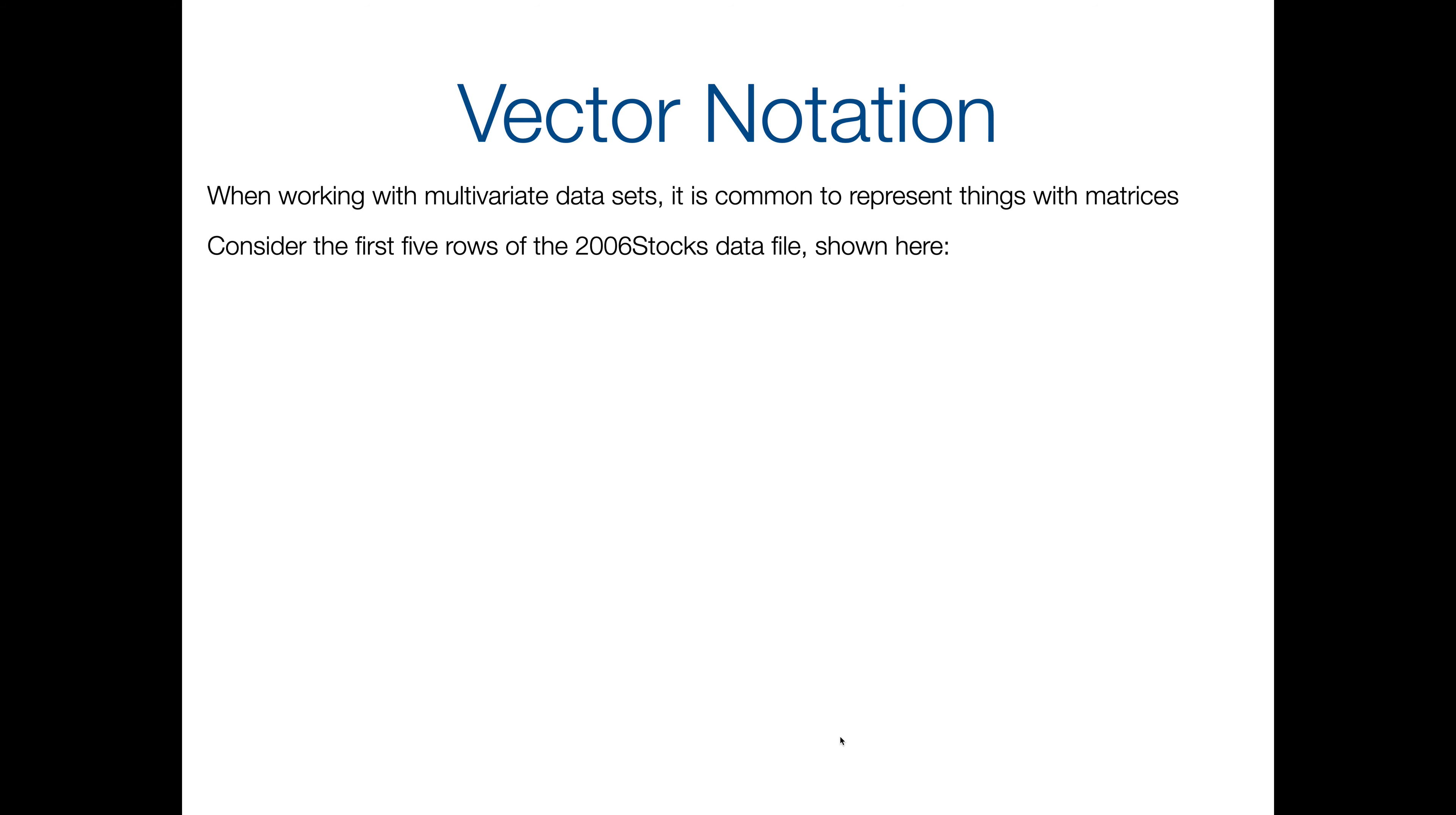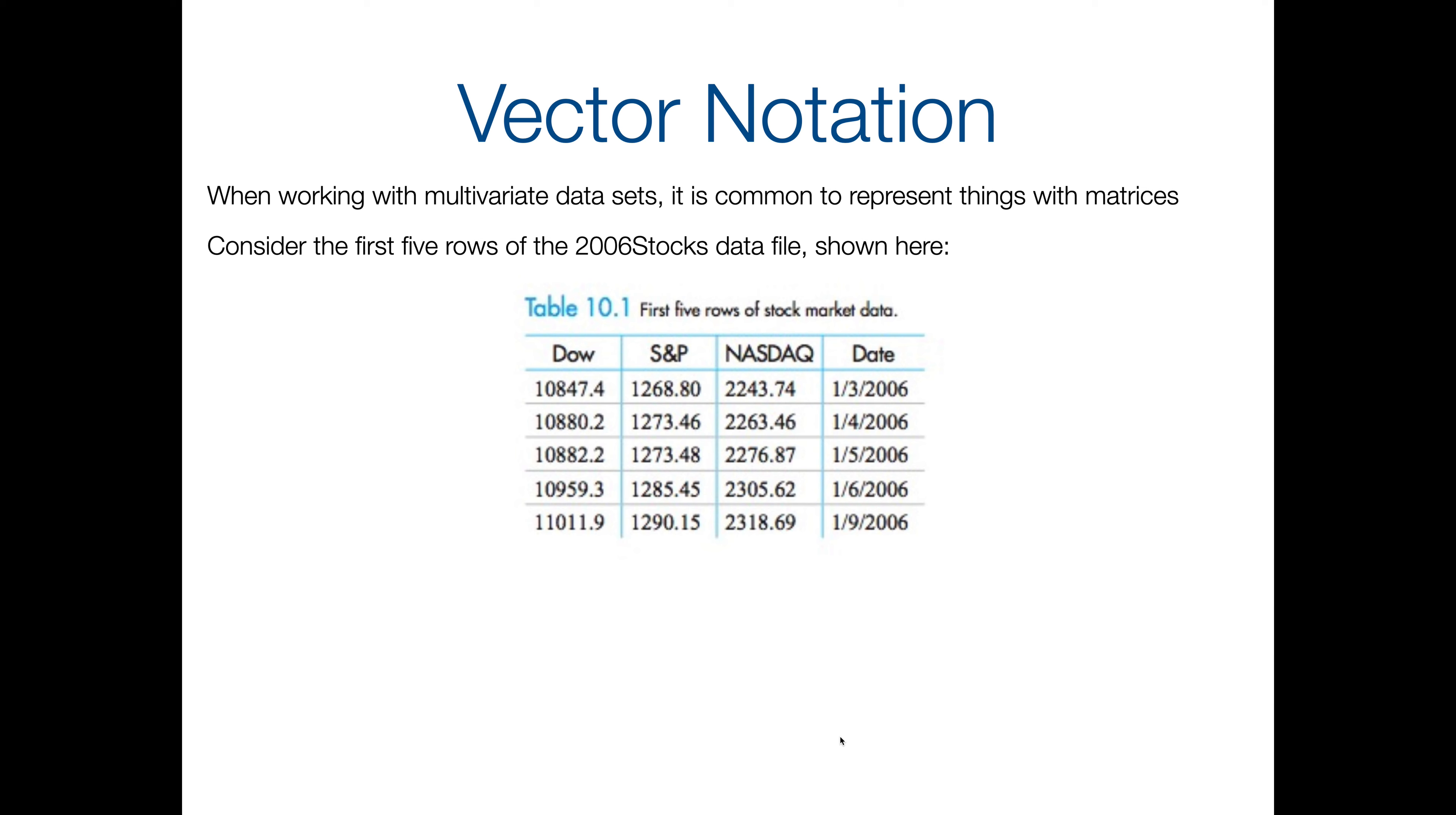For this example, consider the first five rows of the 2006 stocks data set. We've also got four columns going on here. So we've got the Dow Jones, the S&P, NASDAQ, and a date. We're gonna focus in on just those first two, just to make things simple. These first two columns could be represented as two vectors, x1 and x2. And notice my notation here, it's a lowercase x and it is bold. So a bold lowercase x with a subscript of 1 and a subscript of 2. So those are going to be column vectors and they're going to have 251 observations each.